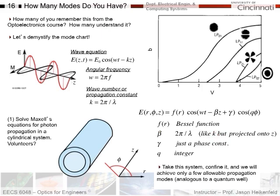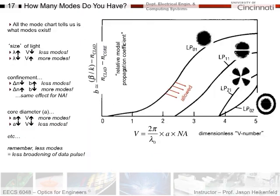Instead of k, I now have beta, which is like k, but it's basically like how much of my propagation constant is projected onto the z-axis. So it's how much is projected onto the z-axis. Gamma is just a phase constant, and q is an integer in this equation. So let's go a little bit further and start to understand. We'll use some of these terms on this next slide.